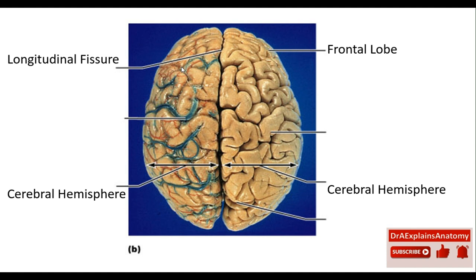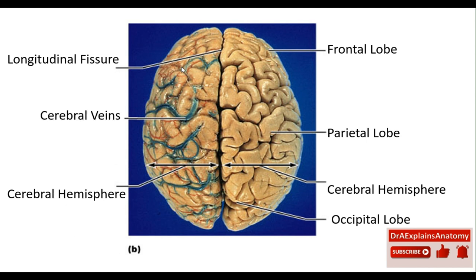This right here is the frontal lobe, whereas this is the parietal lobe, and this is the occipital lobe. These are the cerebral veins. We can see in red the cerebral arteries, and these are the cerebral veins.